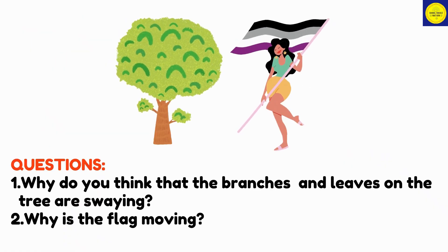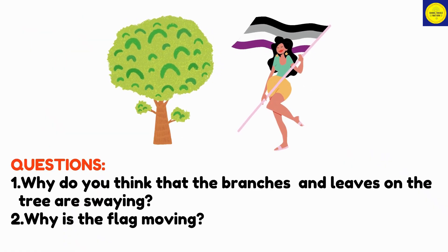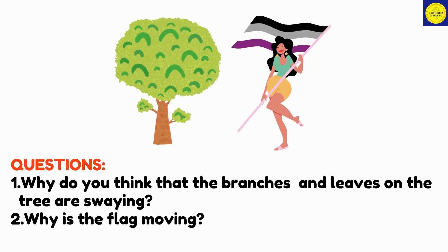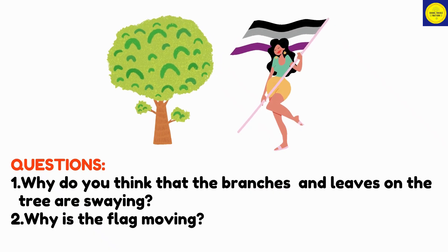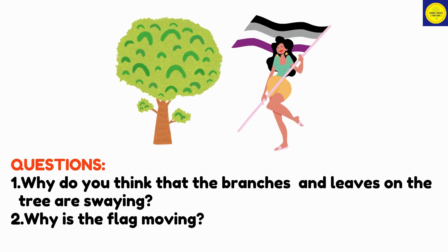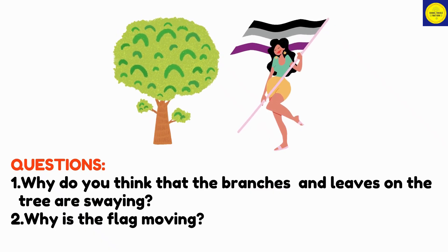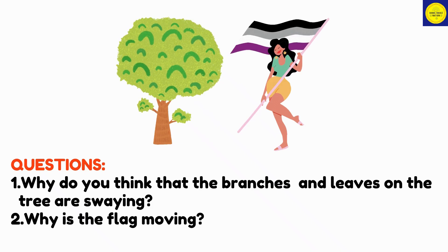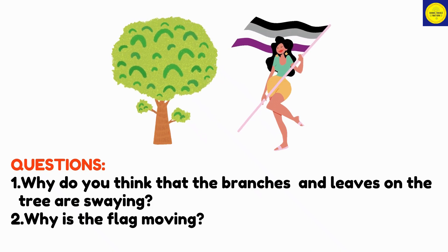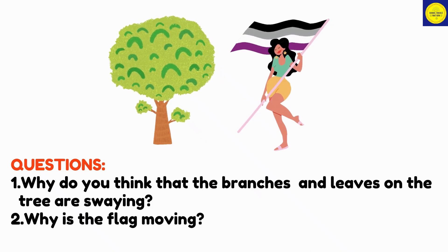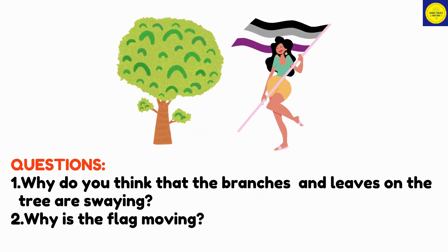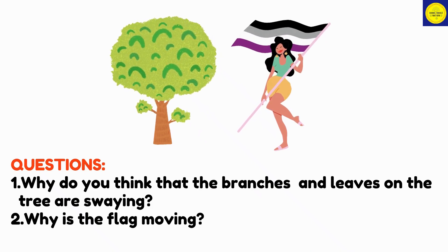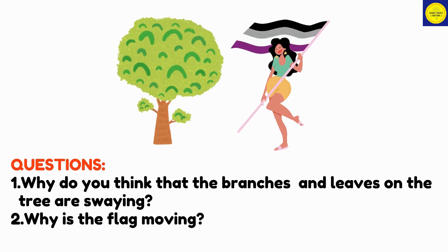Here's another set of questions. Number 1: Why do you think that the branches and leaves on the tree are swaying? Number 2: Why is the flag moving?